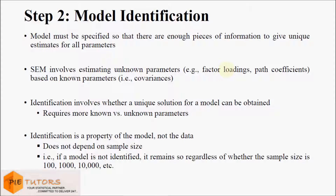There are two requirements for model identification in SEM. We should have at least as much information as there are unknown parameters to be estimated, and every factor must be assigned a scale or metric. If these assumptions are violated the model cannot be estimated — these are called under-identifiable models, which have more parameters to estimate than can be estimated from available information. Identification is a property of the model and does not depend on the data; if a model is not identified it remains so regardless of sample size. A model is identified if it is possible to uniquely estimate each of the unknown parameters.